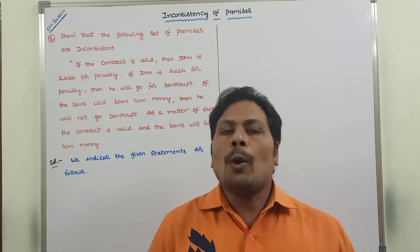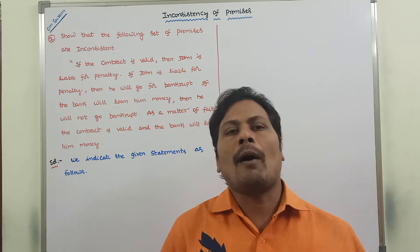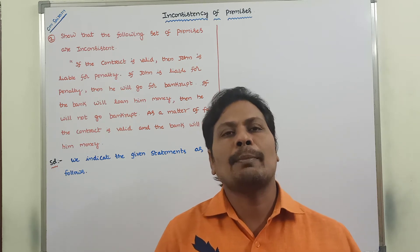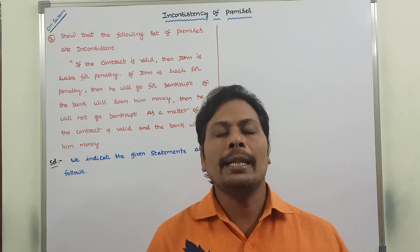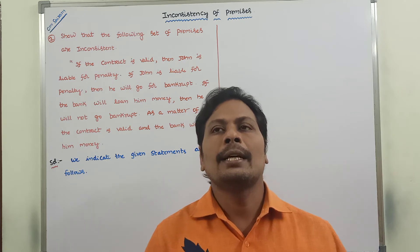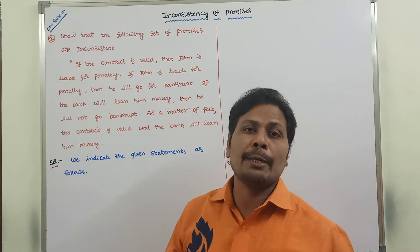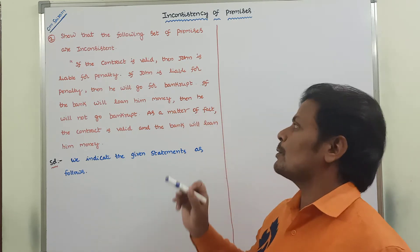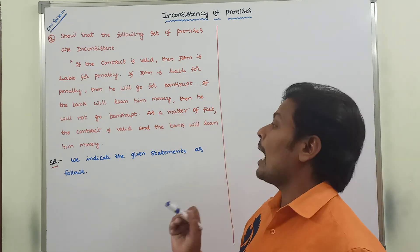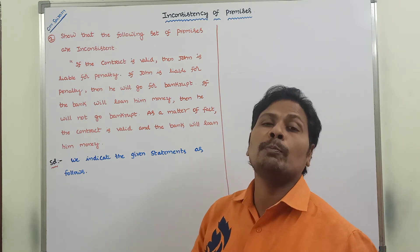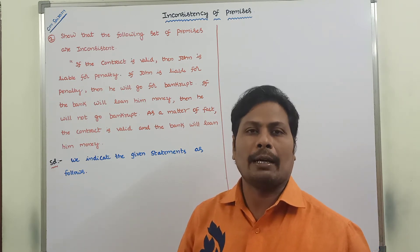We have already solved one example problem on the indirect method of proof, or proof by contradiction. In this method, several statements are given. From those statements, first we have to write the premises. After that, we have to check whether the given premises are inconsistent or not.